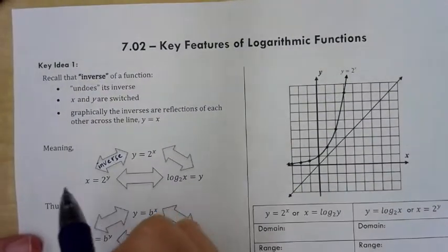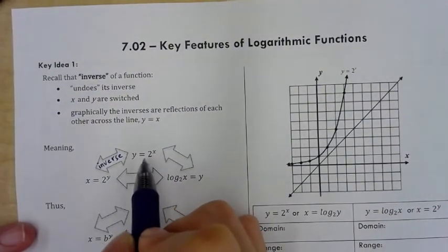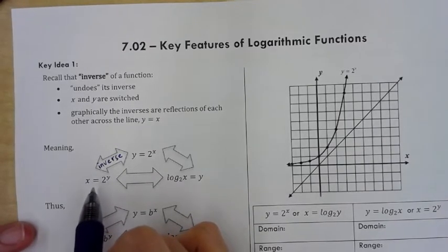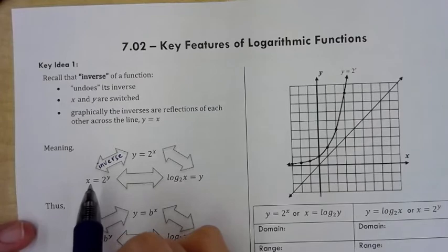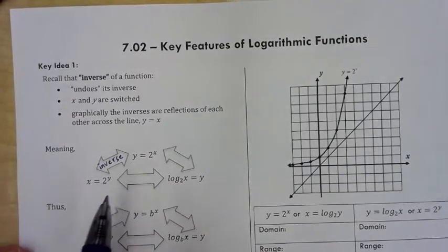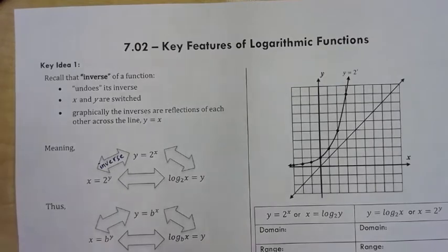If I were to graph the inverse of this function, when we graph a function we always want to isolate y. So after I switch x and y, I solve for y. That's how we find the equation of the inverse of the exponential function — because when we graph, we need to write the equation in terms of y equals.